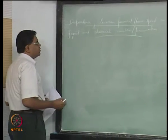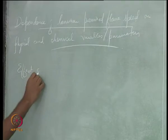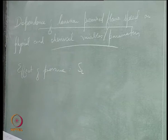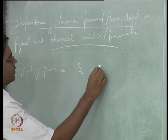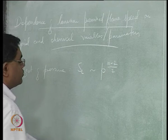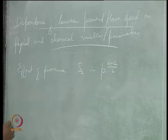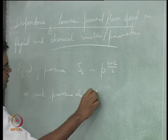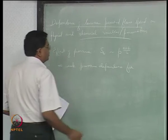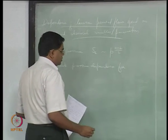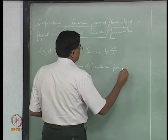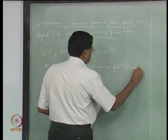In the last class we looked at the effect of pressure on flame speed. For an nth order reaction, the flame speed goes as p to the power (n-2)/2. This gives a weak pressure dependence for typical hydrocarbon oxidation combustion reactions with a global order close to 2, so typically second order reactions.